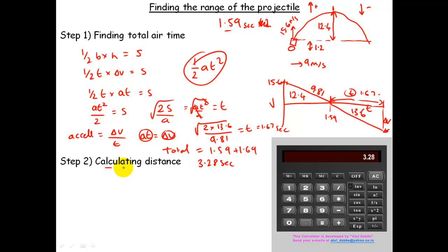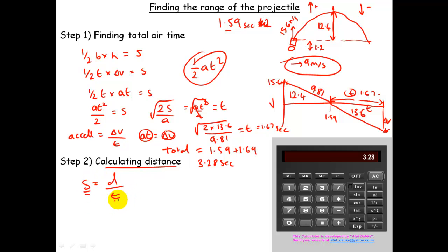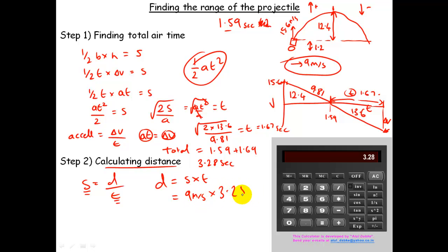Now we get to the really easy bit: calculating the range, or the distance traveled. I'll use the simple formula: distance equals speed times time. I know the horizontal component of velocity is 9 meters per second, and the total air time is 3.28 seconds. So distance equals 9 multiplied by 3.28, which gives me 25.92 meters. That's my final answer for the range. It's slightly different from the simulation's value of 29.3 meters — there are probably some rounding errors accumulated through the calculation.